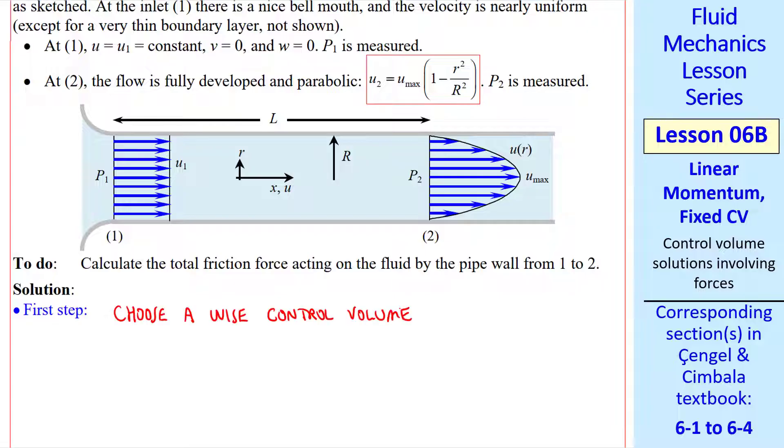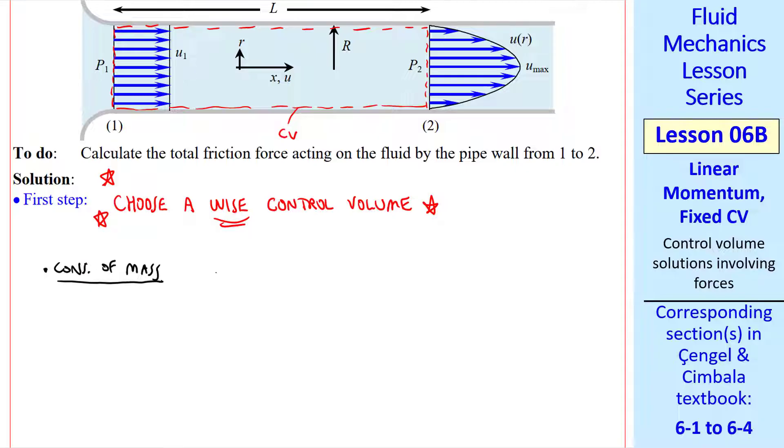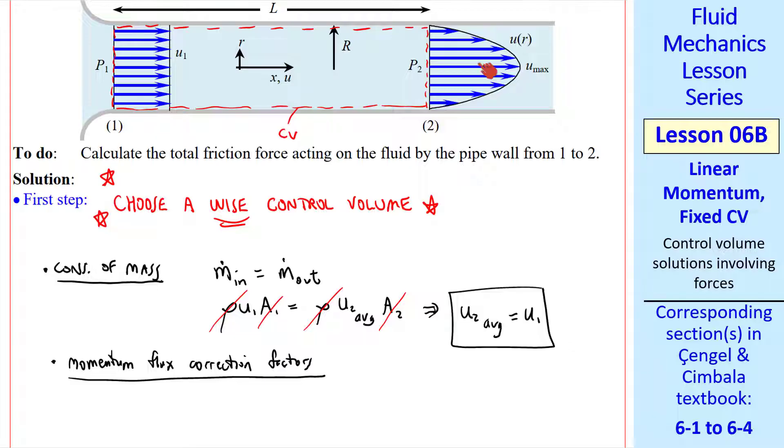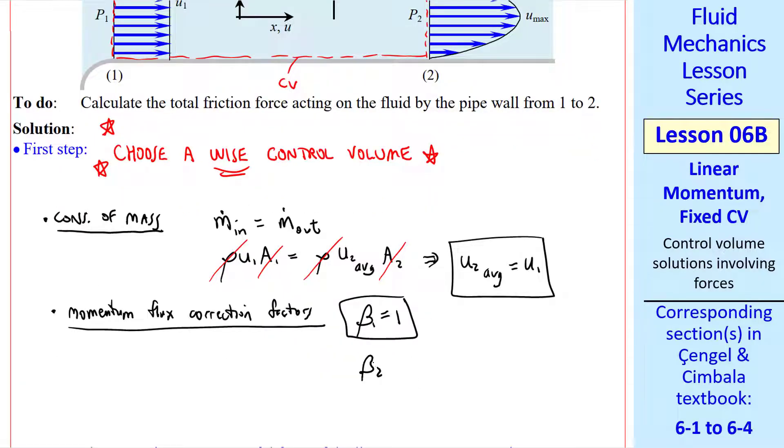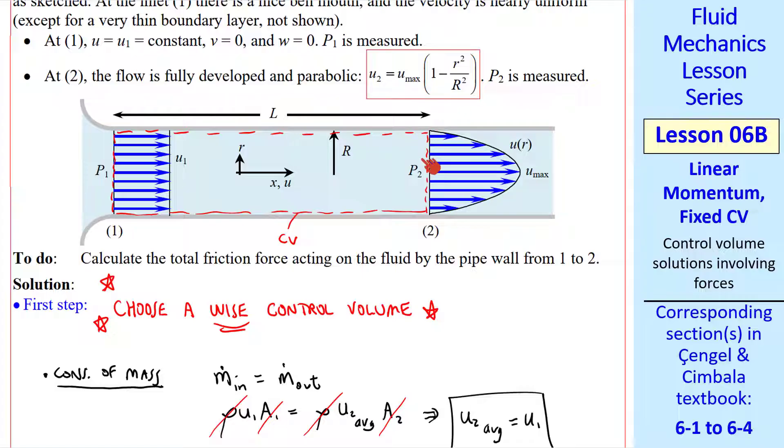The first step in any of these problems is to choose a wise control volume. I cannot overemphasize this point. As we saw with the energy equation, a wise choice of control volume can save us a lot of headache and work. In this case, I'm going to go along the inside of the pipe wall. Since we're interested in the total friction force on the pipe wall, I slice through the inlet and the outlet and complete my control volume. Now we'll use our conservation equations. Conservation of mass, m dot in equal m dot out, or rho u1 a1 equal rho u2 average a2. It's incompressible so the densities go away. And area 1 equal area 2, so u2 average must equal u1. If we had an arbitrary velocity profile, we would have to integrate to find the momentum flux correction factors. But here we have a uniform flow at 1, so beta 1 equal 1, and we have fully developed laminar pipe flow at 2, for which beta 2 is 4/3. If you plug in this equation and do the integration, you should get 4/3.